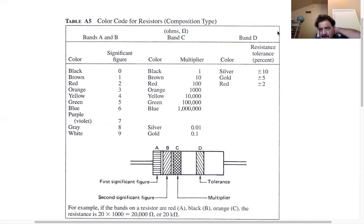So basically you have color bands on the resistors and the colors are listed here on the table: black, brown, red, orange, yellow, green, blue, purple or violet, gray, and white. And it just goes from zero to nine. So black is zero, brown is one, red is two, three is orange, and so forth.